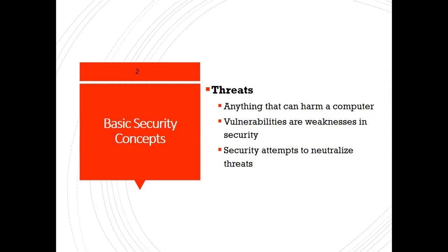A fourth type is process vulnerabilities. Some vulnerabilities can be created by specific process controls. One example is the use of weak passwords, which may also fall under human vulnerabilities. As businesses digitize, attackers are adapting to more sophisticated techniques to breach enterprise networks and data.